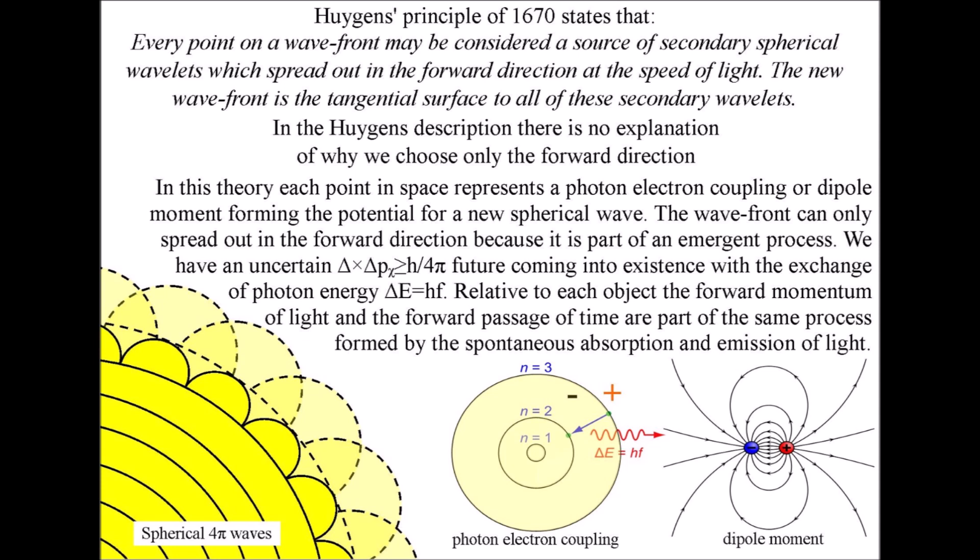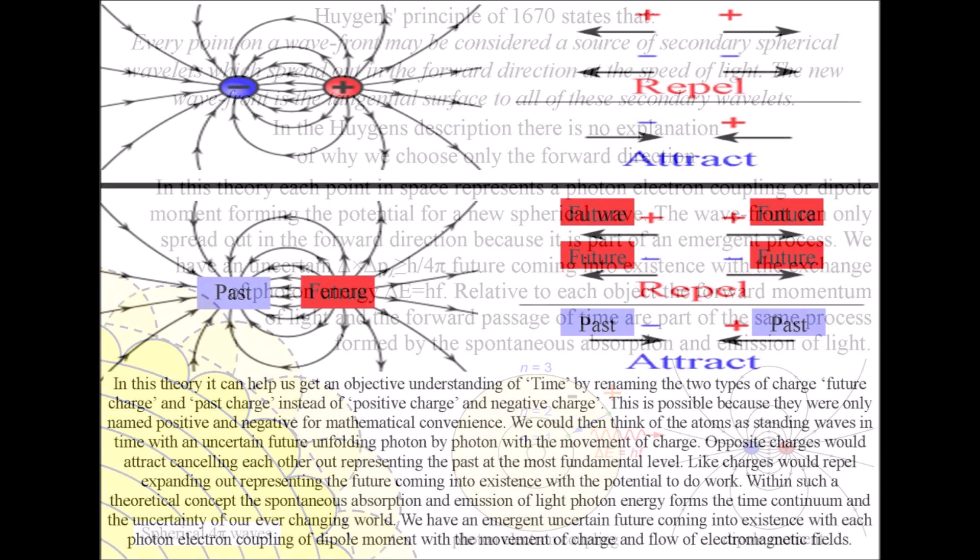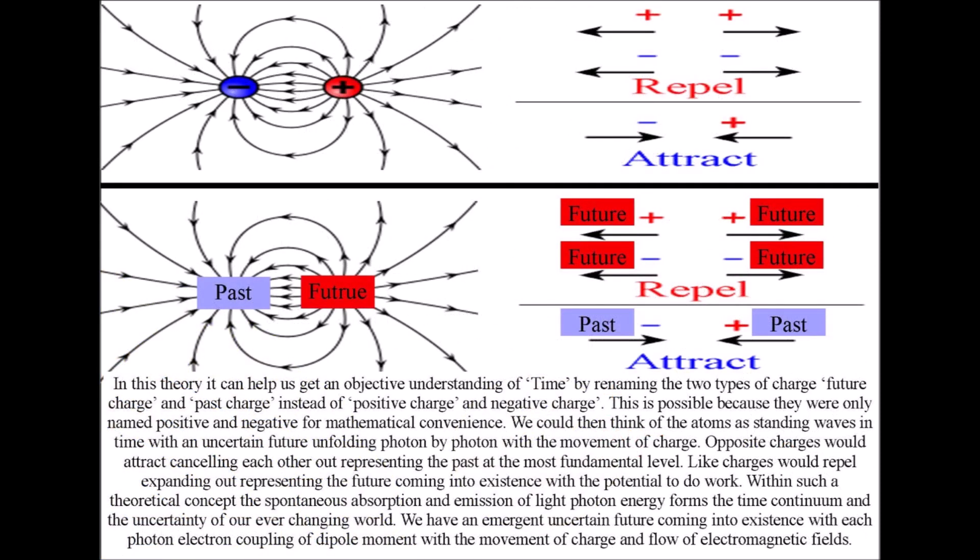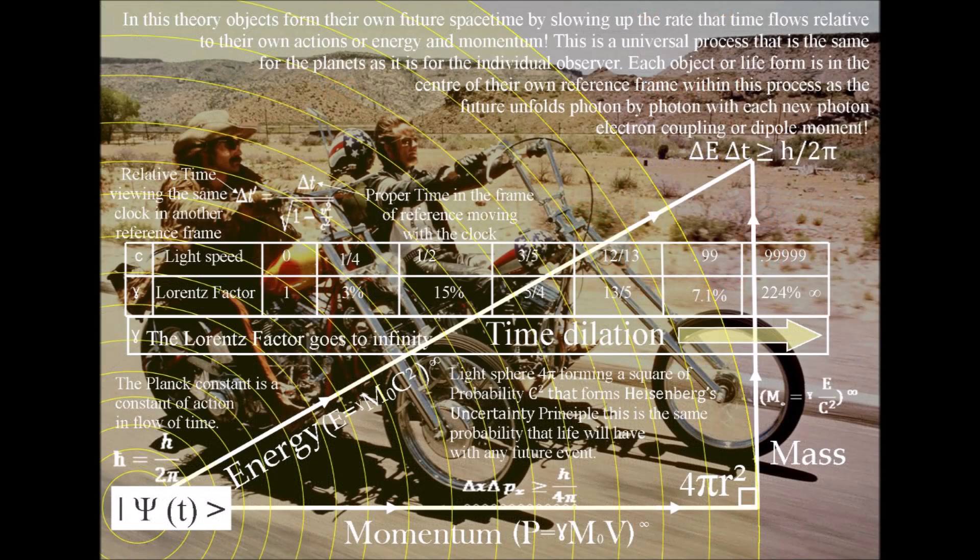This is a geometrical process of spherical symmetry forming and breaking. The spherical symmetry is broken forming dipoles that have a two dimensional aspect as in positive and negative charge. This process of energy exchange forms our ever changing three dimensional world with a two dimensional aspect in the form of a past and uncertain future.